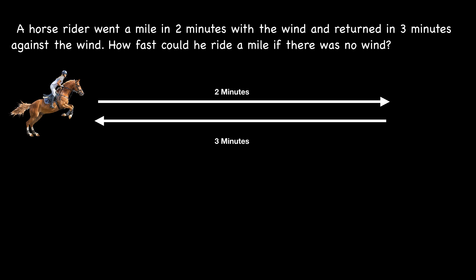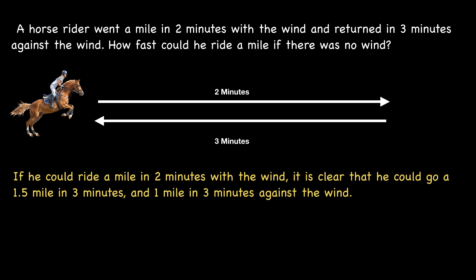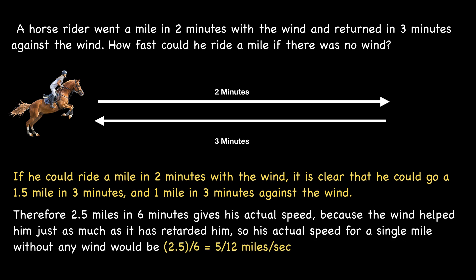If he could ride a mile in two minutes with the wind, it is clear that he could go 1.5 miles in three minutes, and one mile in three minutes against the wind. Therefore, 2.5 miles in six minutes gives his actual speed because the wind helped him just as much as it has retarded him.